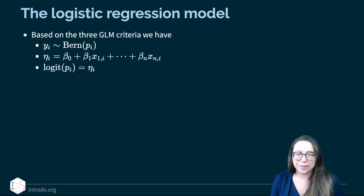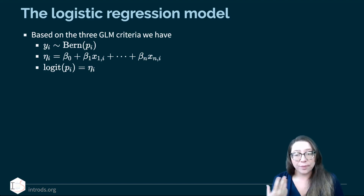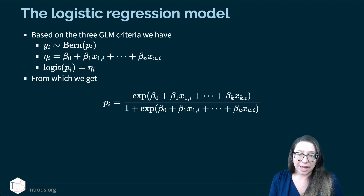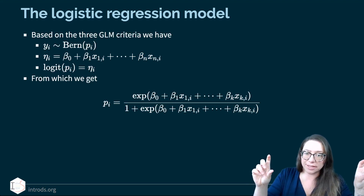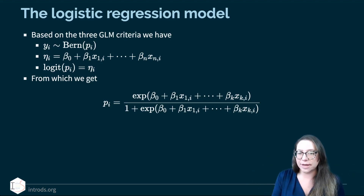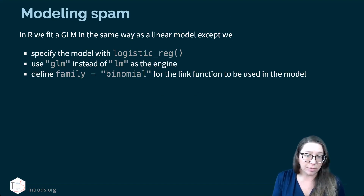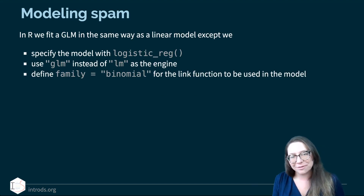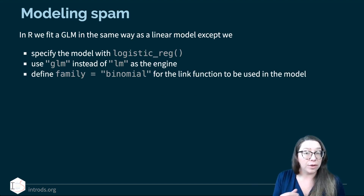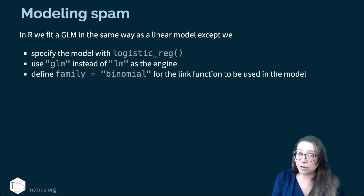Based on the three GLM criteria — the Bernoulli probability distribution, the linear model, and the logit link function — we can derive that the probability p_i equals e to the power of our linear model divided by one plus e to that same linear model. In R, we fit a generalized linear model similarly to a linear model, except we use the 'logistic_reg' function, use 'glm' as the engine, and define the family as binomial for the link function.